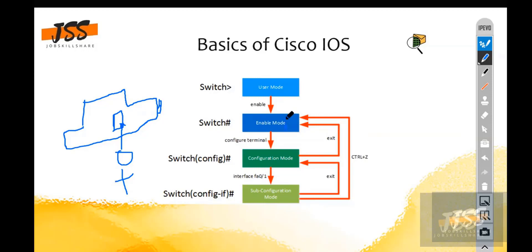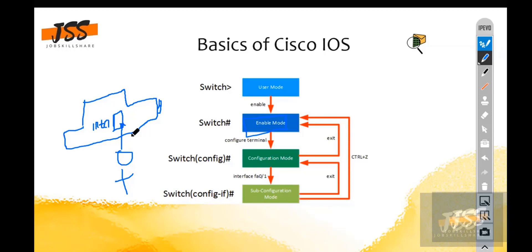Enable mode is like now you have a key, you go inside, and you can sit and touch the internal parts of your car - the interiors. That is the enable mode.